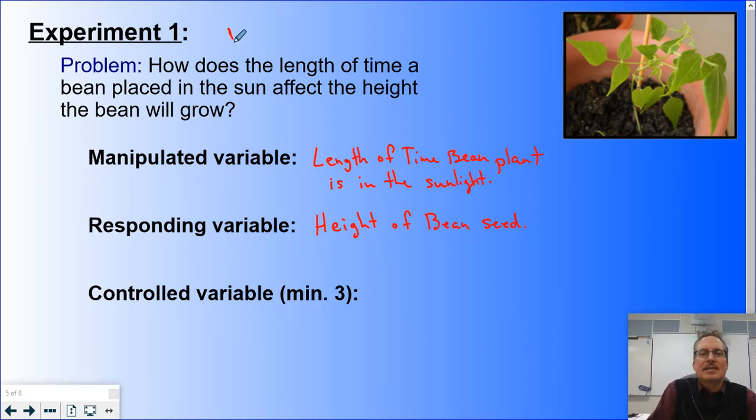If I have a series of pots all exactly the same, I fill them all with dirt. I put this one in the sunlight for zero hours, two hours, four hours, six hours, eight hours during the day. What are some variables we are going to control? We have changed the number of hours. That's what we manipulated. We've decided we're going to measure the height.